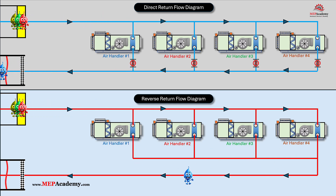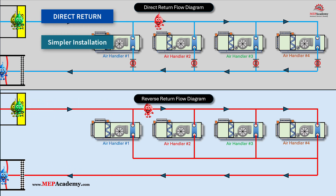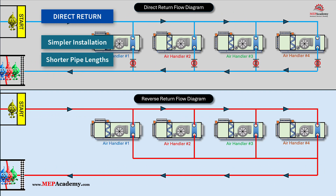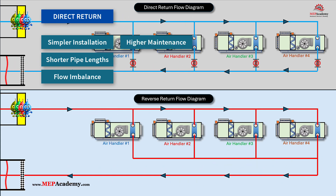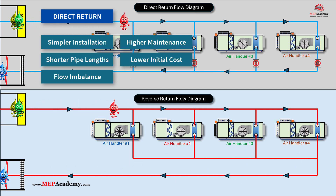Here are the main ideas to remember about direct return vs. reverse return piping systems. Direct return piping: simpler installation — main pipes stay the same size until a reduction is necessary, streamlining material handling and installation. Shorter total pipe length typically requires less piping, saving on material costs and installation time. However, unequal pipe lengths to each terminal unit create varying flow resistances, making water balancing more challenging. More frequent adjustments and use of balancing valves are needed to ensure consistent flow rates. Lower initial cost — installation is generally less expensive due to reduced pipe material and labor.